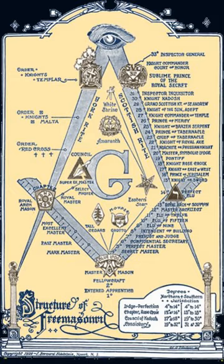In England and Wales, after the degrees of Craft Freemasonry, there are a large number of separately administered degrees and orders open only to Craft Freemasons. Under the English Constitution, the Holy Royal Arch is the only degree formally recognised by the United Grand Lodge of England beyond the three degrees of Craft Freemasonry. Other orders and degrees are however referred to and acknowledged by the Grand Master of the United Grand Lodge of England, and all their members are necessarily Masons subject to the English Constitution.